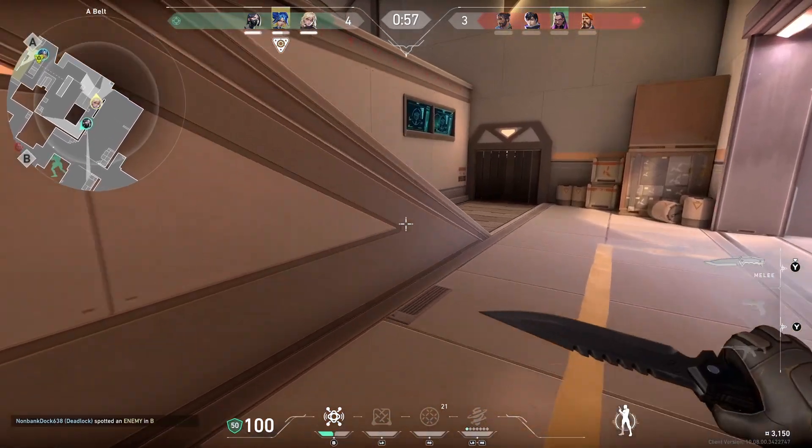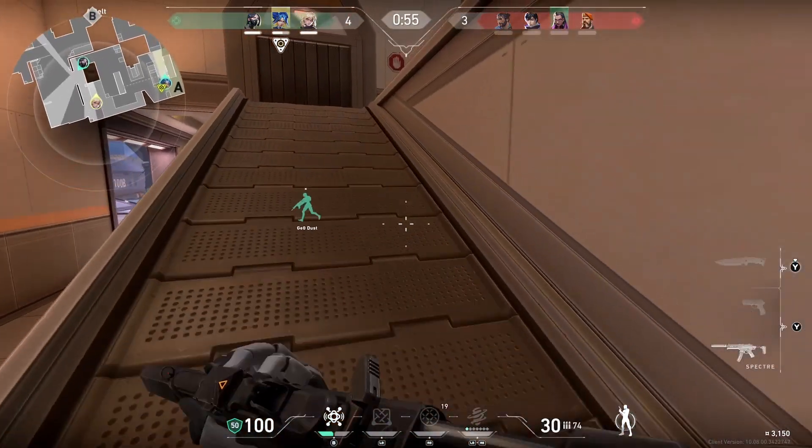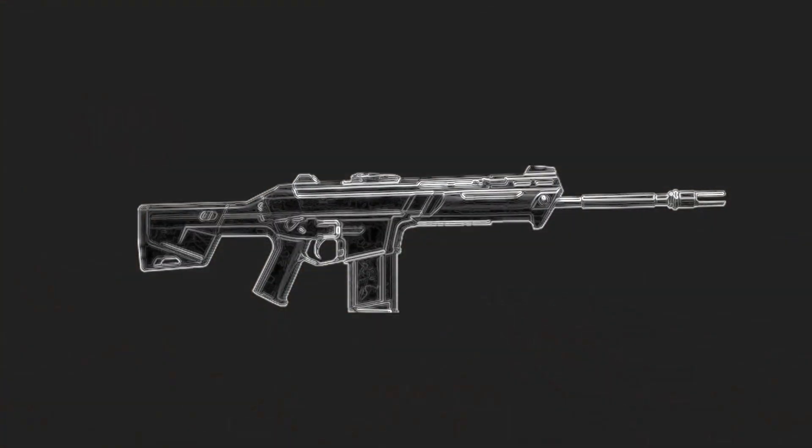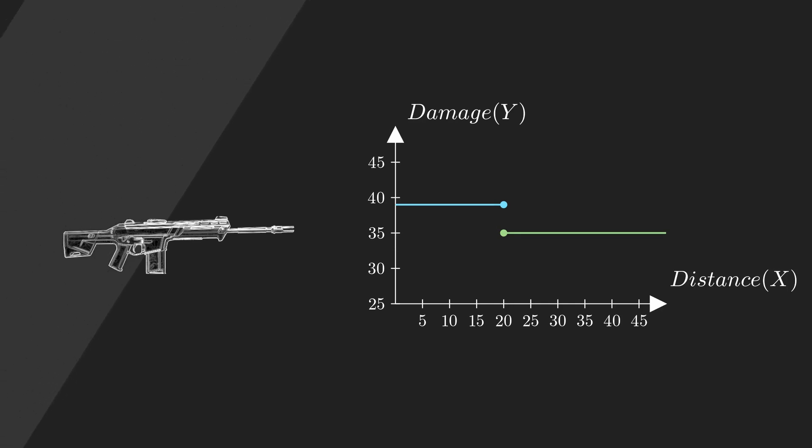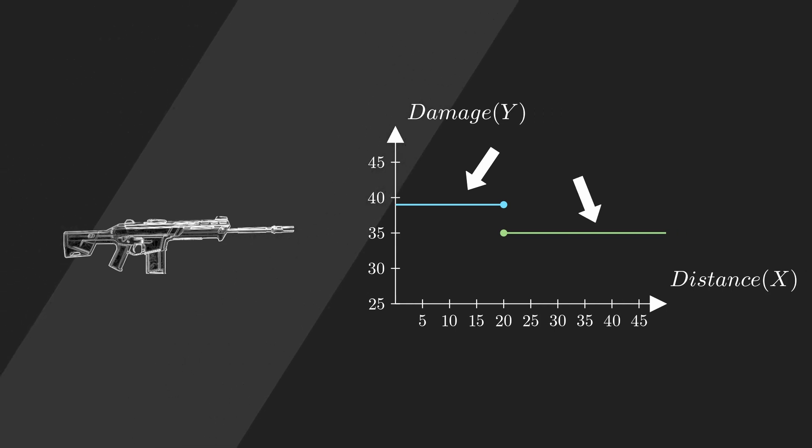This is Valorant. A gun you can buy in the game is the Phantom. This is the damage distance graph for it. We will only look at body shots, since that's the only place I hit. We can work out the damage this gun does by working out the equation of the lines that make up this graph and bound it.